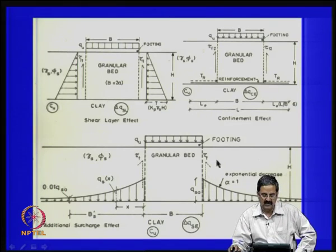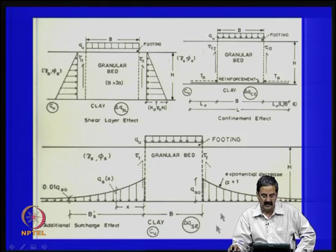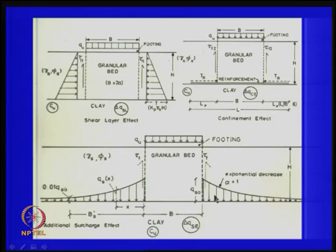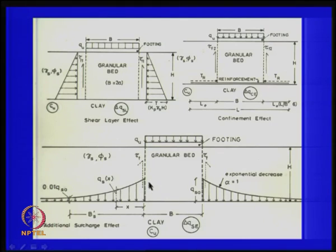Both these effects combined act as a surcharge effect, and this decreases with distance exponentially. There are theoretical formulations for this. We try to say that q_s0 is the initial surcharge and at a distance where it drops to 1 percent of q_s0, we define an effective breadth. A lot of work has been done on these lines in Japan particularly, where there are many islands with highly liquid soft soils, making construction very challenging.